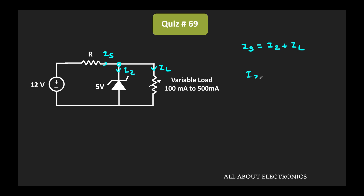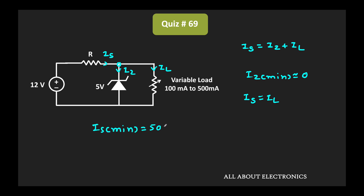That means the minimum value of this Zener current is approximately equal to zero. In such condition, this supplied current Is is approximately equal to the load current. So even with this condition, the minimum required value of the supplied current should be at least equal to 500 mA, since the maximum value of the load current is 500 mA. In any case, the supplied current should be at least equal to 500 mA, and this minimum supplied current will decide the maximum allowable value of R.